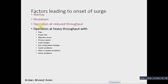Operation at reduced throughput — when there is a low flow condition — creates a danger and threat of surge. There is also a risk during operation at heavy throughput with sudden trips. If heavy flow is occurring and the system suddenly trips, this is a very dangerous condition and surge can occur. At this point, the compressor starts to slow down and its speed rapidly decreases.